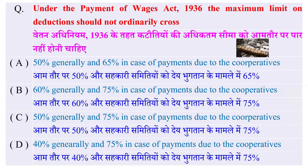Under the Payment of Wages Act 1936, the maximum limit on deductions should not ordinarily cross — वेतन अधिनियम 1936 के तहत कटौतियों की अधिकतम सीमा को आम तौर पर कितने से अधिक पार नहीं करना चाहिए? Options: 50% generally and 60% in case of cooperatives; 50% generally and 75% in case of cooperatives; or 40% generally and 75% in case of cooperatives. The right answer is 50% generally and 75% in case of payments due to cooperatives.